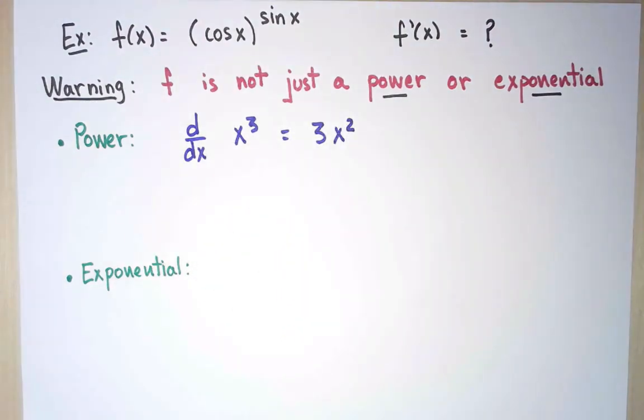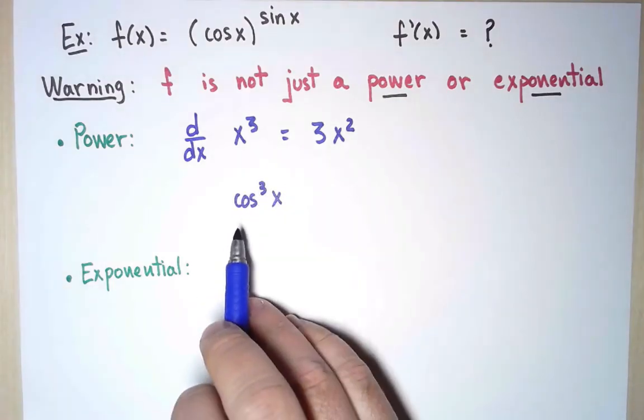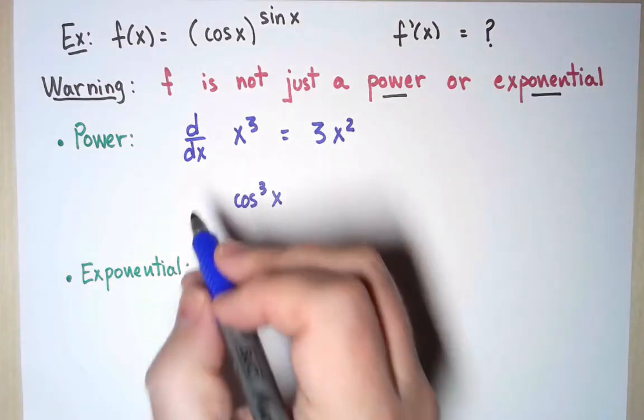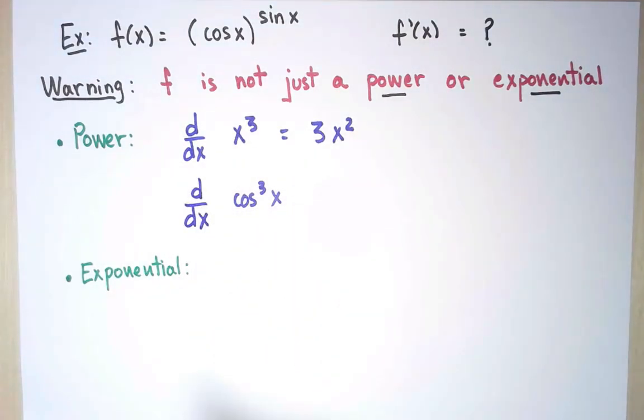I could also have a power composed with a different function. For example, (cos x)³. And I know how to take the derivative of this function as well. I just combine the power rule with the chain rule.